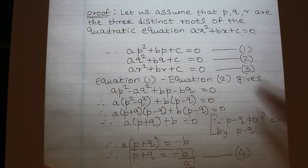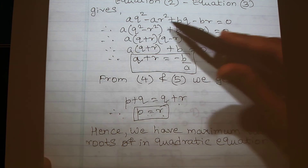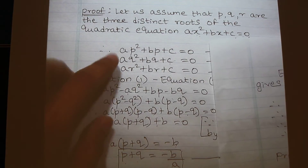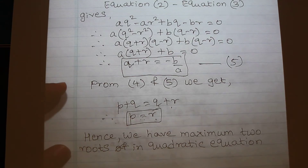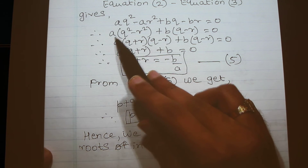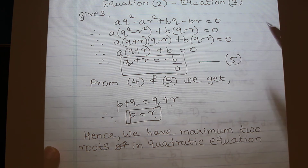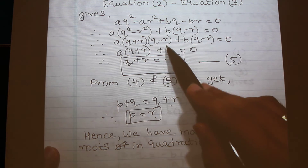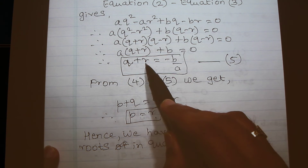Similarly, performing equation 2 minus equation 3, we get aq² − ar² + bq − br = 0, and c cancels out. Performing similar steps — taking a common and dividing throughout by (q − r) — note that I can divide by (q − r) because q and r are distinct roots, so q − r ≠ 0. You cannot divide both sides by zero.